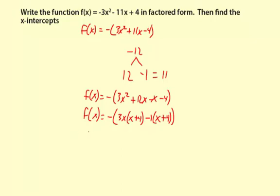And now I'm going to do the grouping. So the 3x and the -1, those go together to make a binomial. And then the x + 4, those in common for both. So there's our factored function.